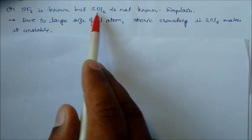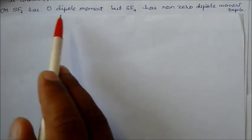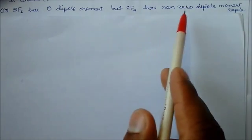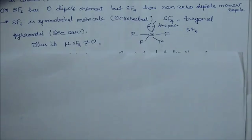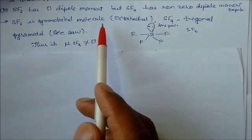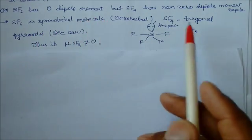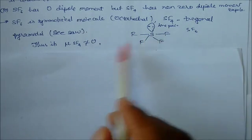SF6 has zero dipole moment but SF4 has non-zero dipole moment. In SF6, the molecule is symmetrical and octahedral. But in SF4, the molecule has a see-saw shape.